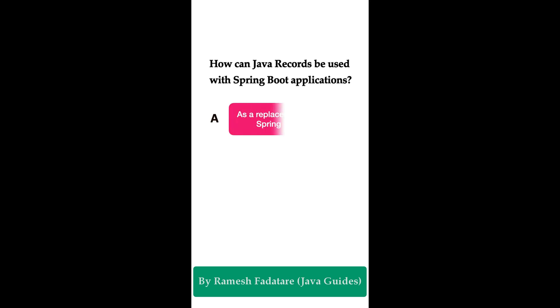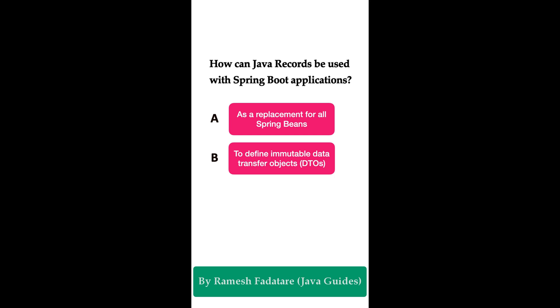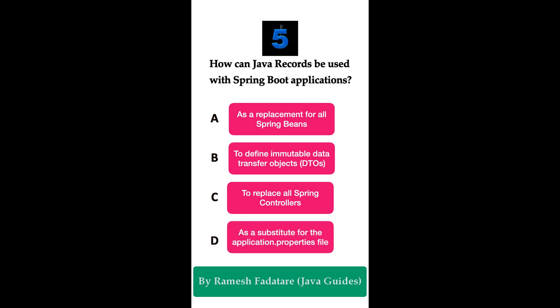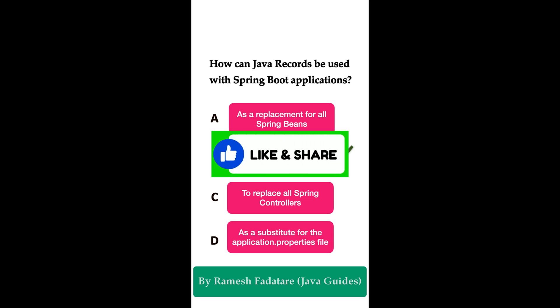How can Java records be used with Spring Boot applications? Option A: as a replacement for Spring beans. Option B: to define immutable data transfer objects. Option C: to replace all Spring controllers. Option D: as a substitute for the application.properties file. The correct answer is option B. Java records can be effectively used in Spring Boot applications to define immutable data transfer objects (DTOs). Since records are designed to be immutable and concise, they are an excellent fit for DTOs where the focus is on carrying data between different layers.